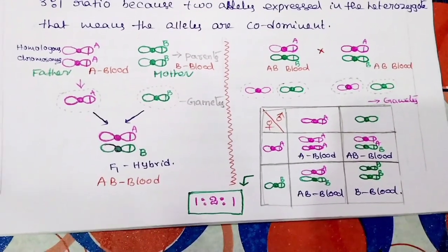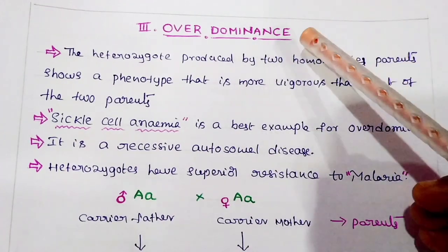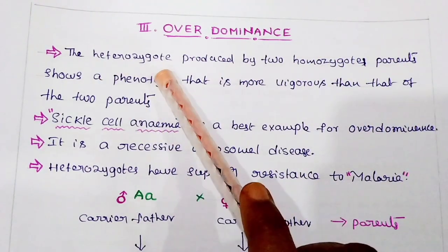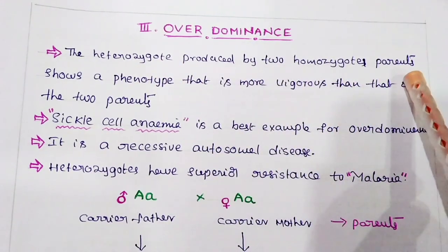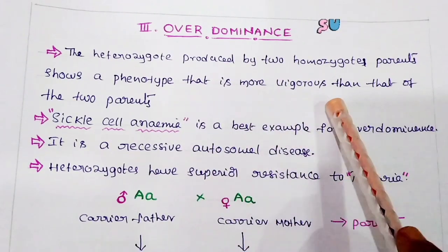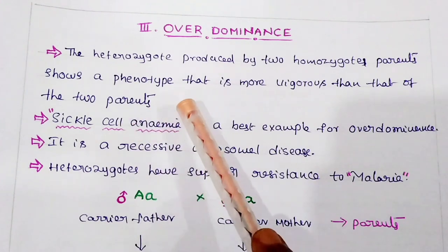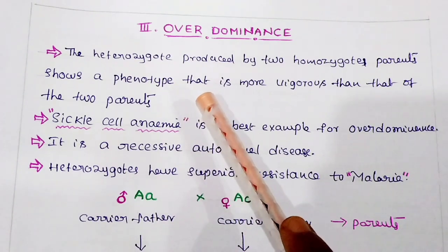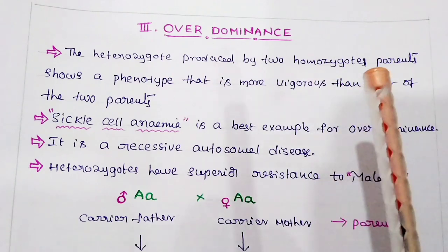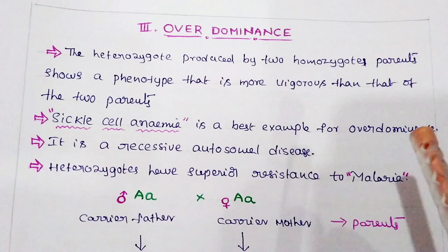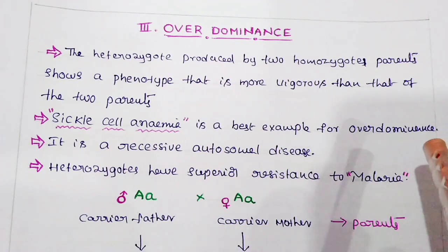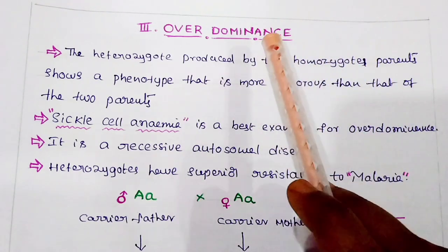Coming to the third allelic gene interaction: over dominance. The heterozygote produced by two homozygous parents shows a phenotype that is more vigorous than that of either parent. The F1 hybrid is more vigorous than both parents — this is also called heterosis. For example, Mendel also observed this in his grass experiments: when he obtained capital T small t F1 hybrids, he got tall plants in the F1 progeny that were taller than the taller parent — this is called over dominance.